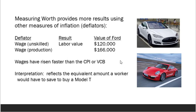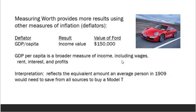Finally, one more way that we can measure the value of the Model T is to use GDP per capita as our deflator. GDP per capita is a broader measure of income, including not just the growth of wages, but also interest, rent, and profits. This would represent how much the average person would have to earn from all sources today to be comparable to a person spending $850 on a Model T in 1909. As a result, we get something fairly similar to what we got when we measured the labor value.